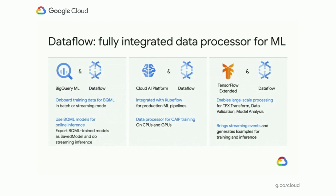For BigQuery, you can use streaming Dataflow to onboard data into BigQuery and pre-process it before it lands there. Once the data is in BigQuery, you can train your models using BQML, which is a variant of SQL, and export the trained models and use them inside of Dataflow for streaming predictions. For the Cloud AI Platform, Dataflow integrates with Kubeflow, which is the orchestrator of machine learning pipelines. Cloud AI Platform also uses Dataflow internally to do model training on CPUs or GPUs. For TensorFlow Extended, Dataflow enables all large-scale data processing, both for feature pre-processing as well as model improvement, and can bring streaming events into streaming inference.